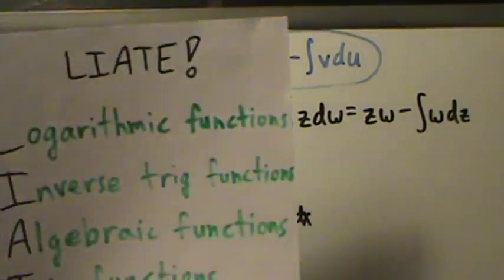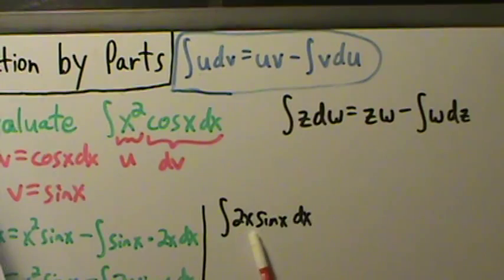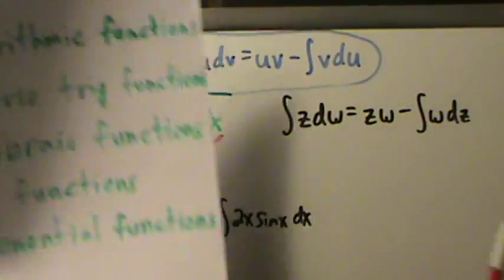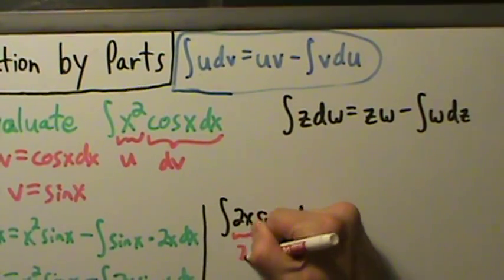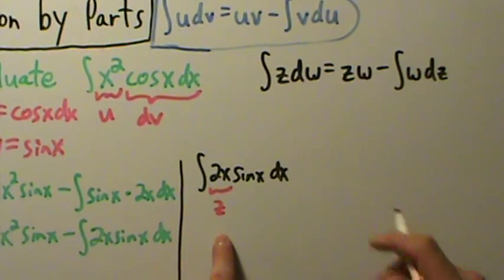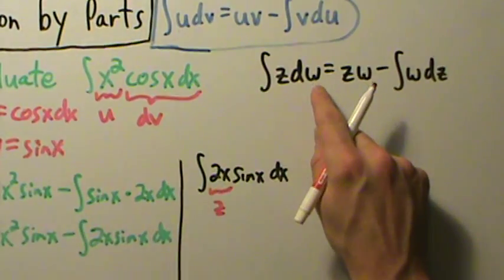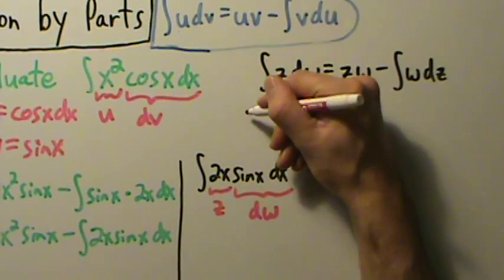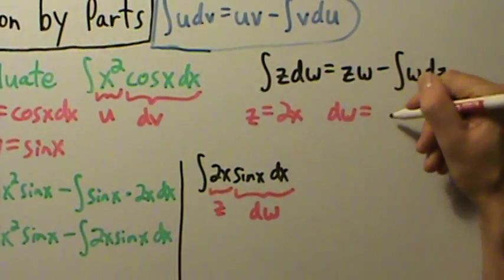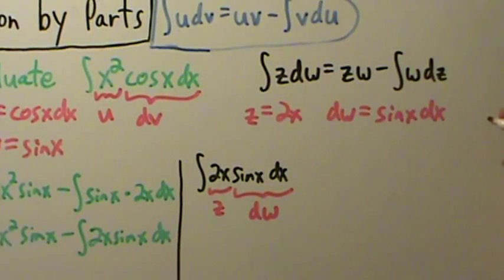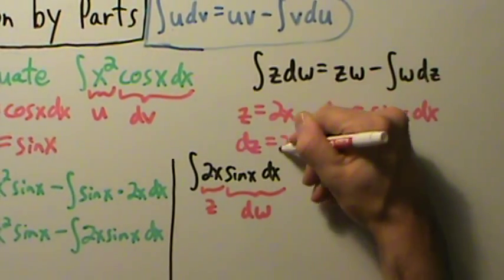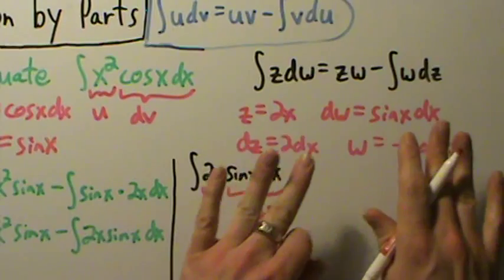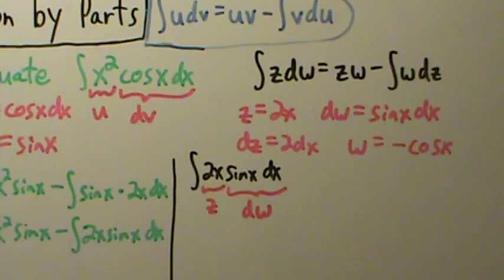Choose z to be the first function on the LIATE list. We have 2x, which is algebraic, and sine of x, which is trig. Algebraic is higher, so z equals 2x. Then dw is forced to be everything else: dw equals sine of x dx. Since z is 2x, then dz is 2 dx. Since dw is sine of x dx, we integrate to get w, which is negative cosine of x. No arbitrary constant on w.